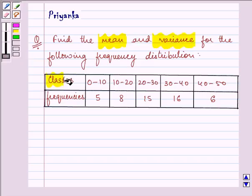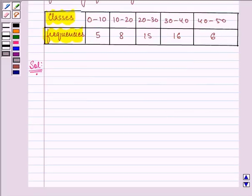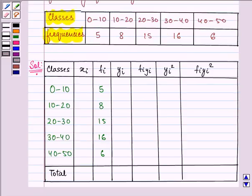Now here we are given the classes as well as frequencies and we need to apply the shortcut method to find out the mean and the variance. For the shortcut method, first of all we need to draw a table. Now here we are given the classes as well as the frequencies.